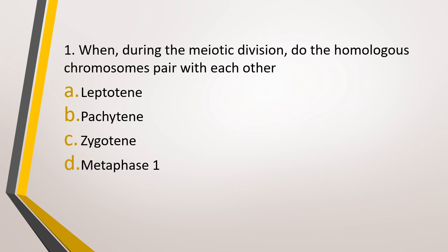Question number 1. When during the meiotic division do the homologous chromosomes pair with each other? Option A: Leptotene, option B: Pachytene, option C: Zygotene, or option D: Metaphase 1. The correct answer is option C, that is Zygotene.